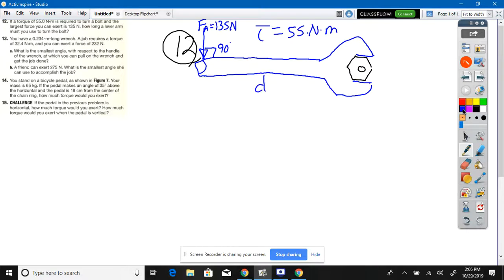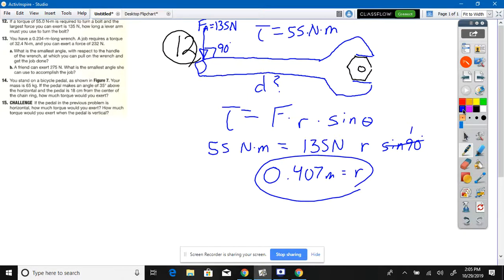We don't know the distance. What's the definition of torque? Force times the distance r times the sine of theta. Torque is 55 Newton meters, force is 135 Newtons, you don't know r, and sine of 90 is one. So it's 55 divided by 135. You should have gotten 0.407 meters.